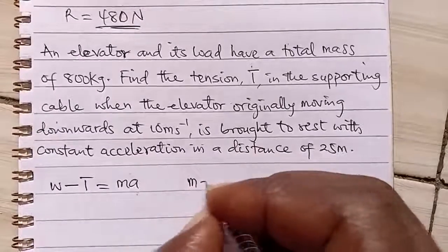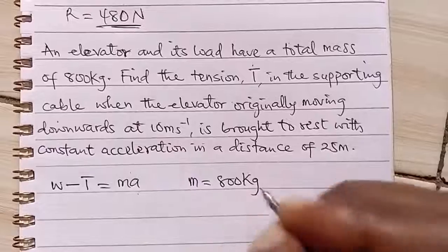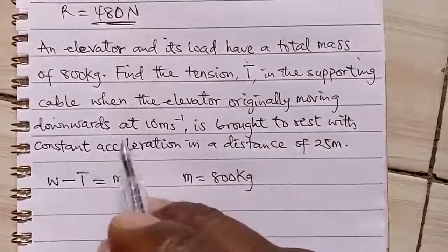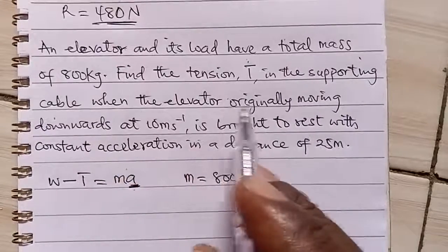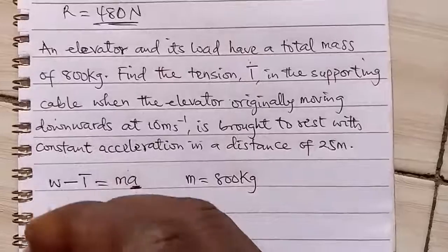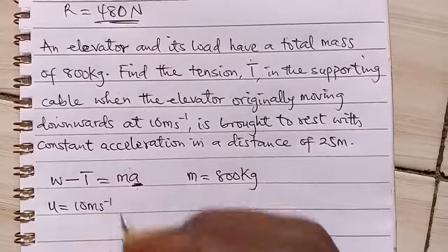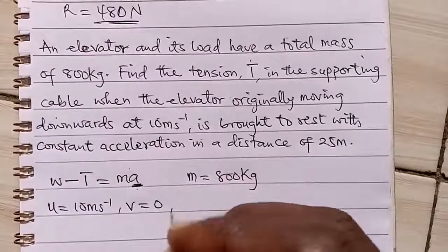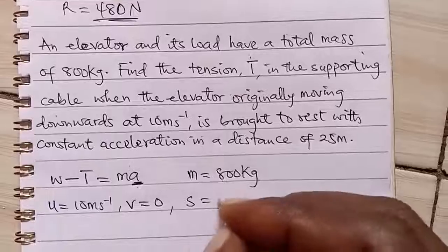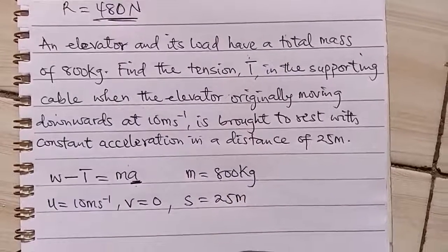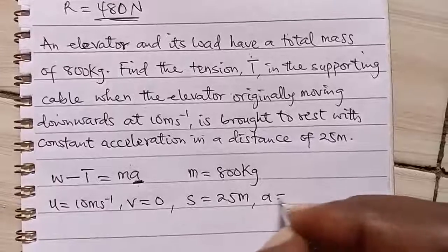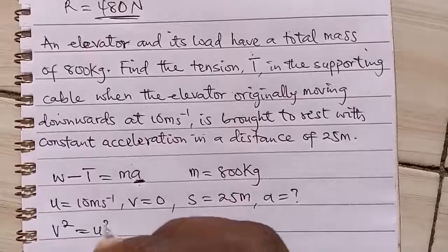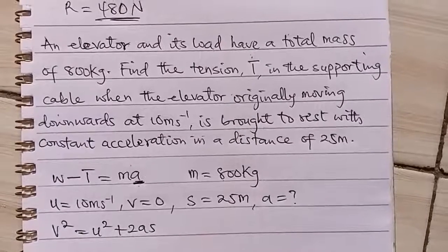Now they give us the mass to be 800 kg, but they did not give us acceleration. But inside of the question, we were given details that told us that it was moving initially with 10 meters per second. So u is 10 meters per second. Now, it was brought to rest, which means that v, final velocity, is 0. Then the distance was 25 meters. Now, we have an equation that says that v squared is equal to u squared plus 2as in equation of motion.